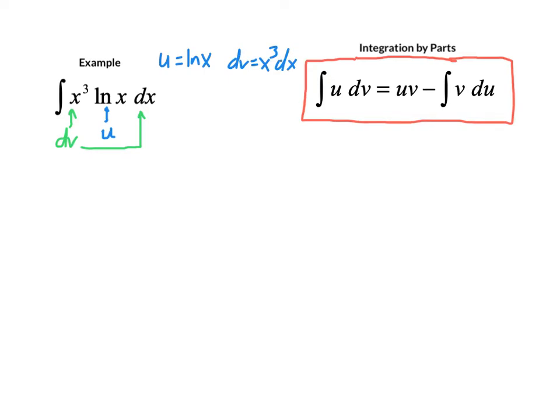So we do then what I like to call the little calculus, where we do the differential of the natural log, which you probably know is 1 over x dx. And then v, we integrate x to the third by power rule, and that gives us 1 fourth x to the fourth.